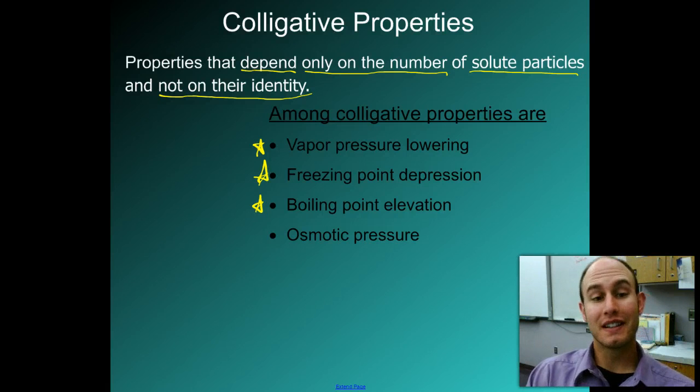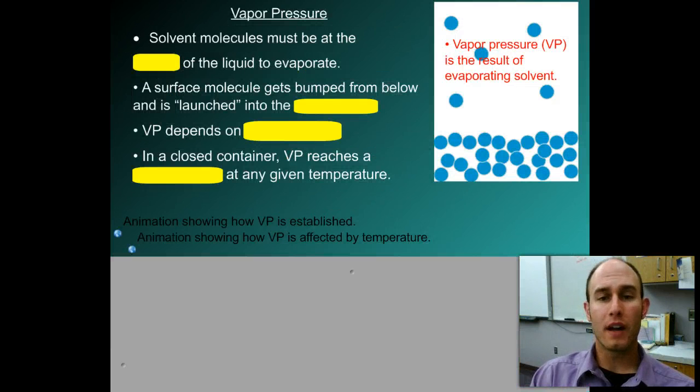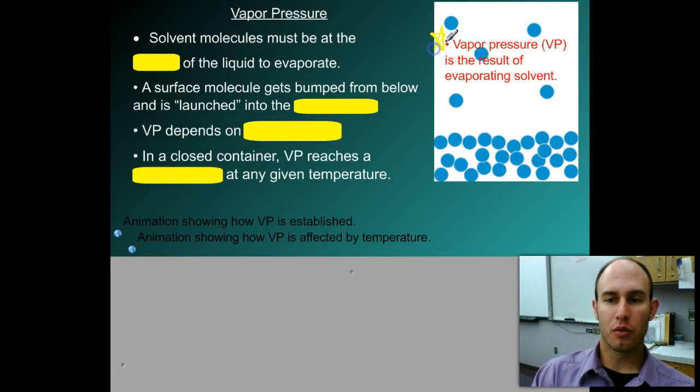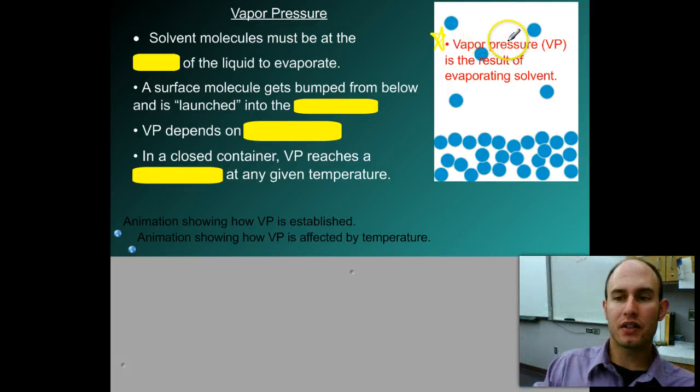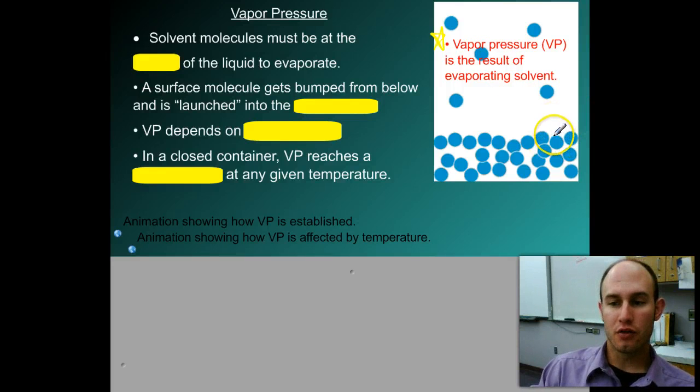Let's continue here by looking at what vapor pressure is. Vapor pressure here is basically the pressure as a result of evaporating solvents. In this picture here you see that these water molecules are escaping up into their gas phase and they're going to form a gas above the liquid and this is going to be called vapor pressure.